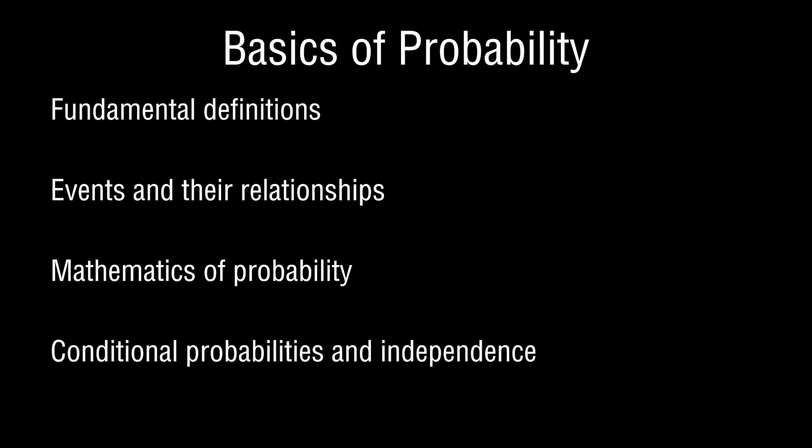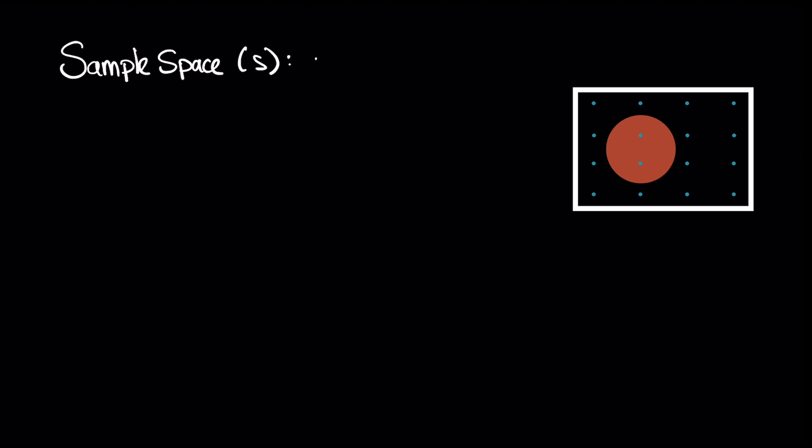The idea of conditional probabilities and the idea of independence — these are really key and important. When we first introduce the concept of probability, we usually have a nice diagram because a visual representation of what is happening in a probabilistic problem speaks far more than the quantitative numerical aspects. The first thing we draw is this rectangle, which I've defined as the sample space — the set of all possible outcomes for a probabilistic problem.